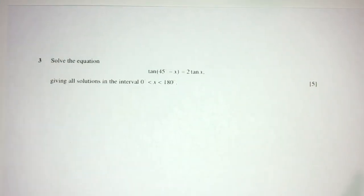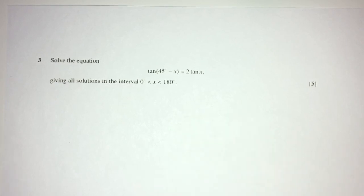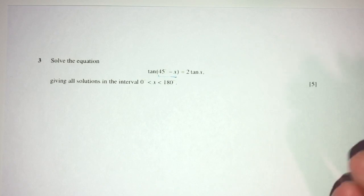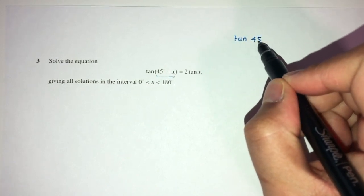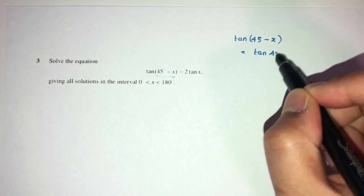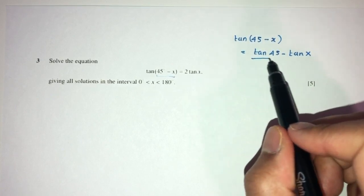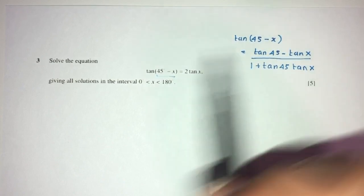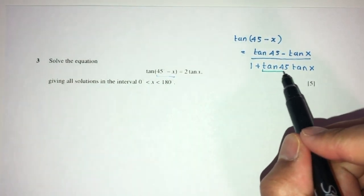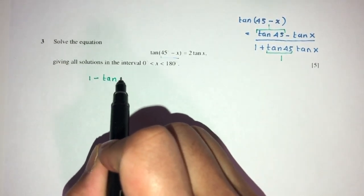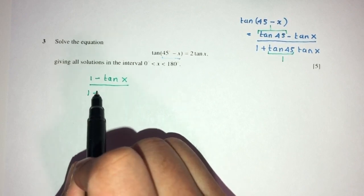Now let's move on to question number 3. Here we have to solve the equation — finding the values of x. By using the formula for tan of a difference angle: tan(45 minus x) equals (tan 45 minus tan x) over (1 plus tan 45 times tan x). Since tan 45 equals 1, this simplifies to (1 minus tan x) over (1 plus tan x), and this equals 2 tan x.